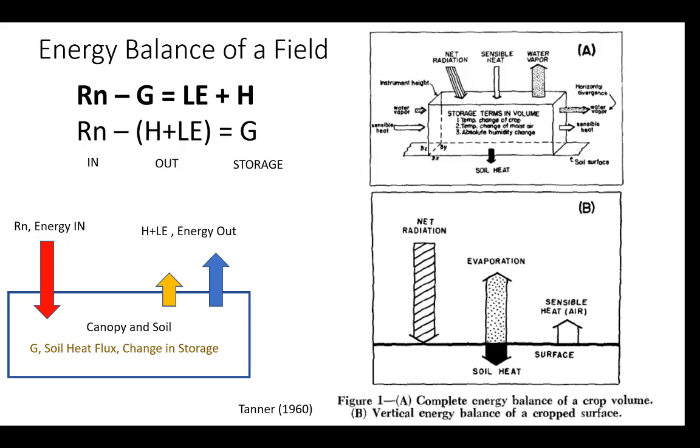But we often, when we work with really large fields, we can ignore this horizontal transport of energy. It's so small that it's negligible. And we can just collapse it down into only looking at vertical movement of energy, which you see here in figure B. And this is where we get this famous equation Rn minus G equals LE plus H. So immediately, this energy balance, surface energy balance that we'll call it, really only applies to large areas or fields, things like that, forests, large areas. And here again, you can see that we can rewrite the energy balance equation. See the one just below it there, where we're showing Rn as the energy in, H and LE as the energy out, and then soil heat storage or soil heat flux is the change in storage.